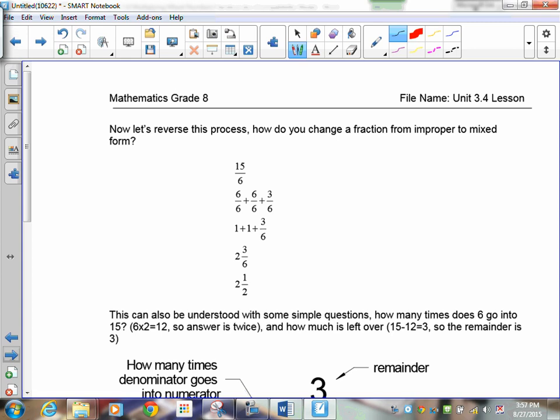Now we have to take an improper fraction and turn it into a mixed fraction. You need to know how many times does 6 go into 15 and what's left over. If you want, you can break it all into 6s here. That's 1, that's 1. This is another 1, and there's 3 sixths left over. So that becomes 1 plus 1, so that becomes 2 and 3 sixths, which reduces to 2 and a half. But I'm not worried about this right now. I'm more concerned if you can get that.